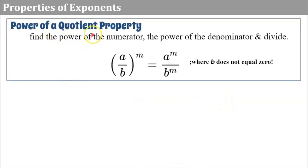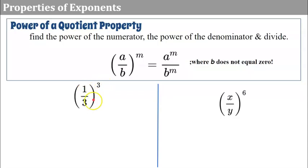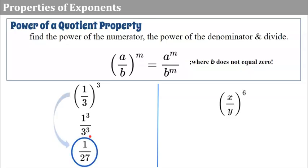The power of a quotient property: find the power of the numerator and the power of the denominator, and divide. Remember that the base b cannot be zero. So if you have a fraction a over b raised to an exponent m, raise a to the m and b to the m, then simplify. For example, one-third cubed: one cubed over three cubed equals one over 27.